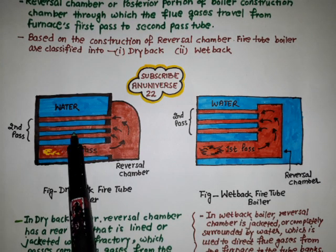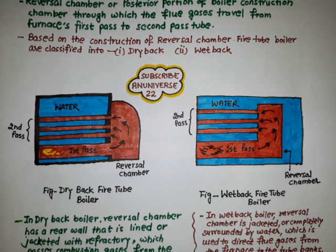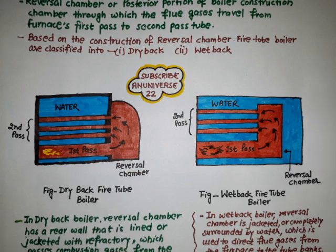In the dry back boiler, only the tubes are surrounded by water, not the reversible chamber. It uses a common rear tube seat and features convenient fire side and water side access. However, it has a large functional footprint due to its heavy vessel-sized rear door, which requires sufficient space to open and a cool-down period before opening. Dry back boilers also require regular refractory and tube seat inspections, which can be costly maintenance items.